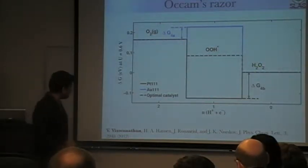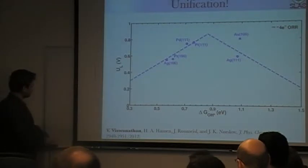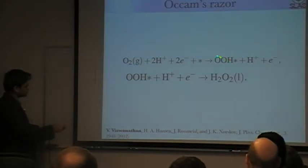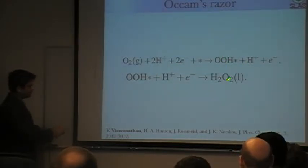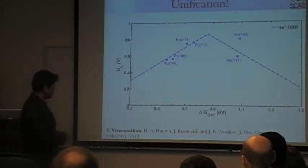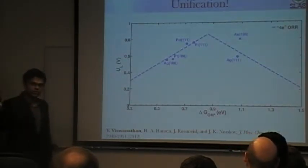So now, this is the robustness of the model. This is the original volcano for the four electrons. And so what you see here is the right leg, which is to get OOH on the surface, the right leg of the volcano is exactly the same. There is now a new free energy equation that limits the left leg of the volcano. And so the descriptor is exactly the same, because OOH binds, OOH correlates with OH, as I told you.